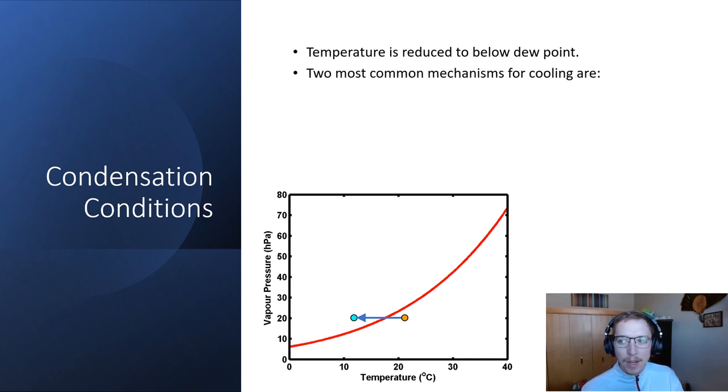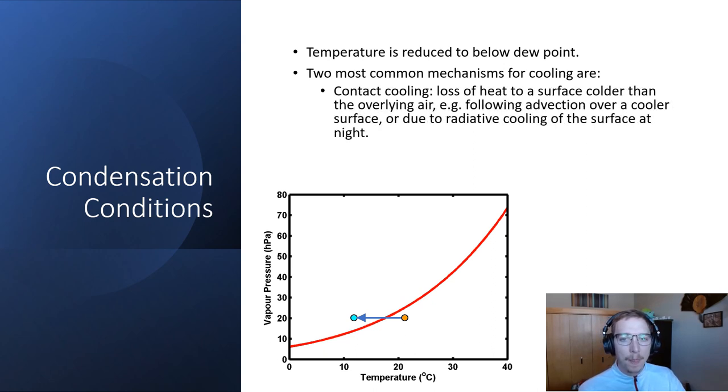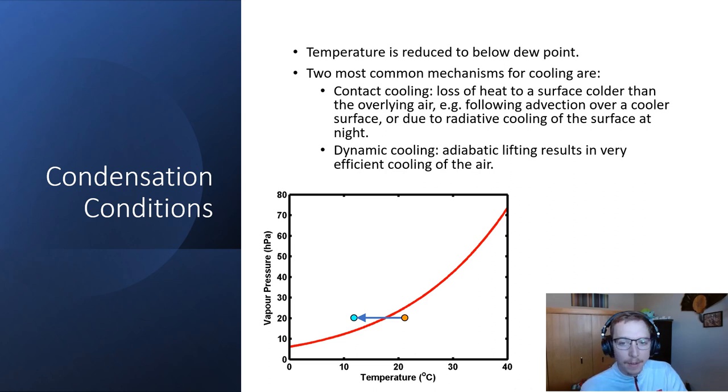The two most common mechanisms for cooling. We've talked about these a little bit. Things like contact cooling. So, loss of heat to a surface that is colder than the overlying air. For example, following convection over a cooler surface or due to radiative cooling of the surface at night. And then dynamic cooling or adiabatic lifting. We talked a lot about this in the last couple videos. So, adiabatic lifting is just that pressure differential that occurs when you have a parcel of air rising through the atmosphere. That pressure lessens and you have that cooling of the air parcel as you move higher in the atmosphere.